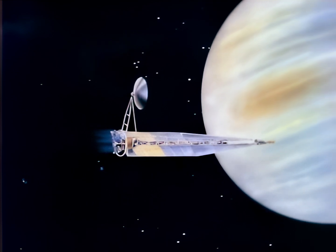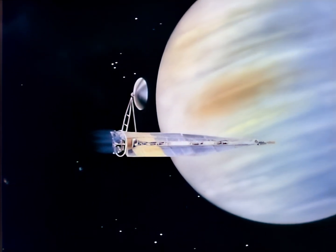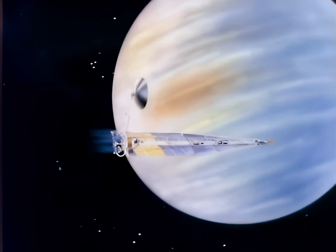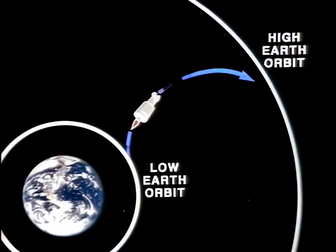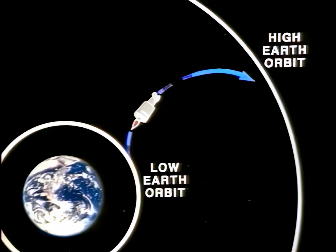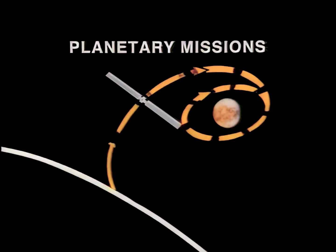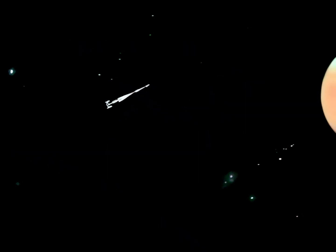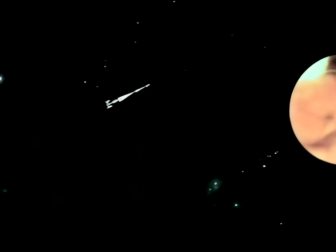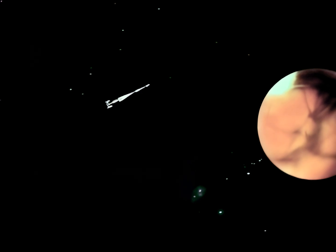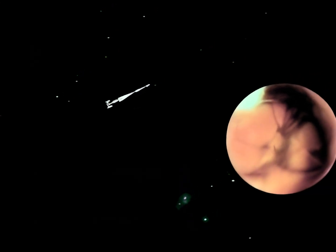Low-thrust systems are also useful for primary propulsion applications for Earth orbit and planetary missions. Examples in Earth space include the transport of communication satellites from low Earth orbit into geosynchronous orbit and the placement of weather satellites in polar orbits for Earth observations. Planetary missions include transferring systems beyond Earth space to planets, comets, and asteroids. Low-thrust electric propulsion is particularly valuable for very energetic planetary applications such as cargo vehicles for major Moon-Mars missions.